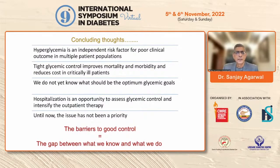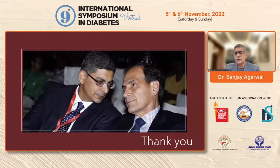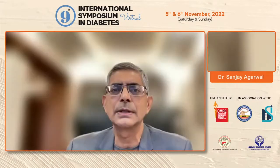We do not yet know the optimum glycemic goals for all hospitalized patients. Hospitalization is an opportunity to assess glycemic control and intensify outpatient therapy. The key barrier to good control is the gap between what we know and what we do. We acknowledge Dr. Umpira, who has probably done the largest body of work in the in-hospital environment. Thank you very much.